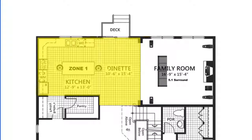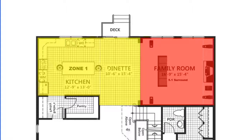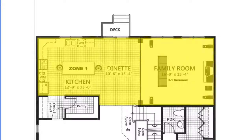Let's assume your kitchen, Zone 1, is adjacent to your living room which contains your home theater receiver and corresponding surround sound speakers. Now let's assume that you want the same music that is playing in your kitchen to also play through the home theater speakers in your living room.